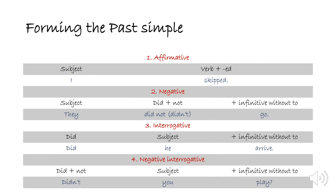Now let's look at how to form the past simple. In the affirmative, we use the subject followed by the verb plus '-ed.' In the negative, we use the subject followed by 'did' plus 'not' plus the infinitive without 'to.' In the interrogative, we use 'did' followed by the subject and the infinitive without 'to.' In the negative interrogative, we use 'did not' plus the subject followed by the infinitive without 'to.'